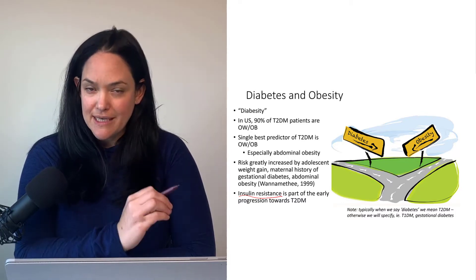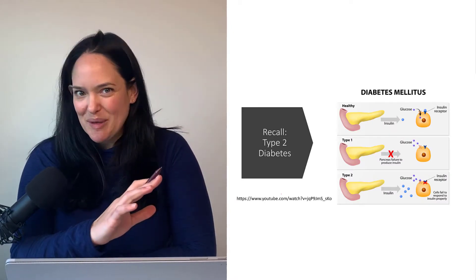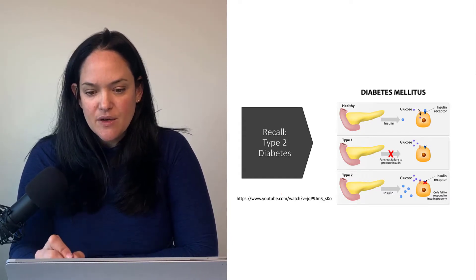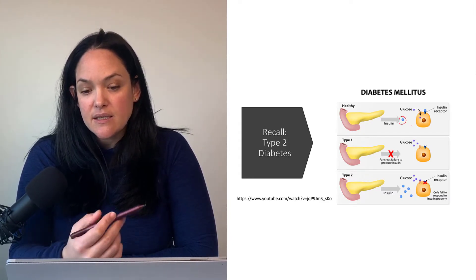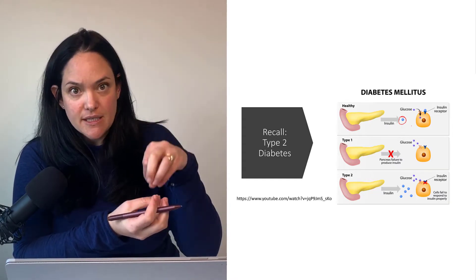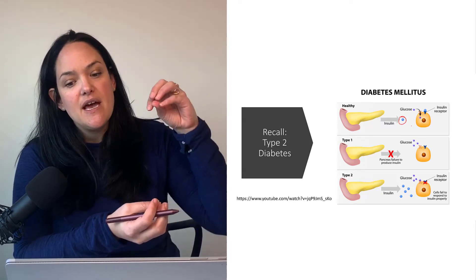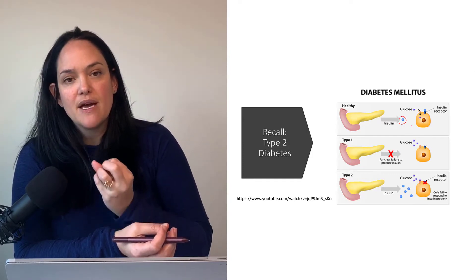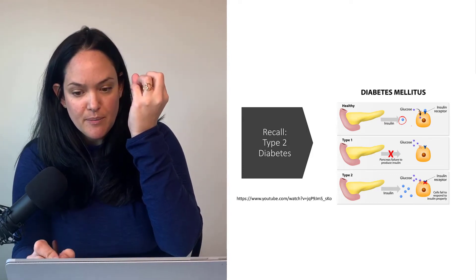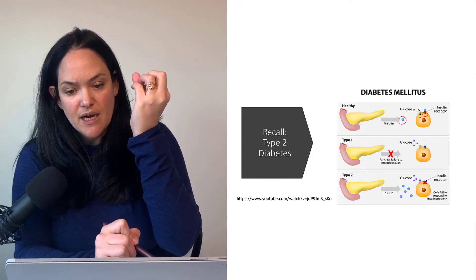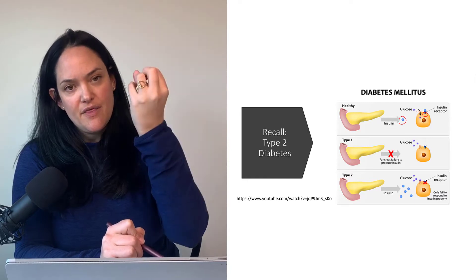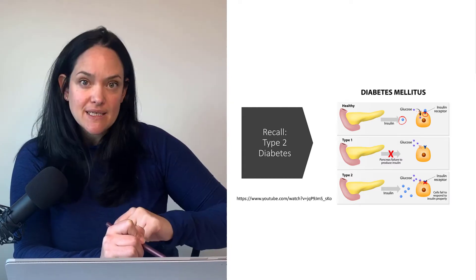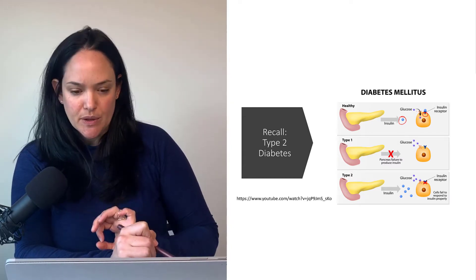That's going to be a common theme as we look at obesity's correlation with cardiovascular disease and cancer as well. In healthy cells, the pancreas releases insulin, which binds to its receptors on insulin target cells like muscle and liver cells. That binding leads to a signal transduction pathway that brings glucose transporters to the membrane of those cells, promoting the influx of glucose into the cells and out of the blood, thereby lowering blood glucose.